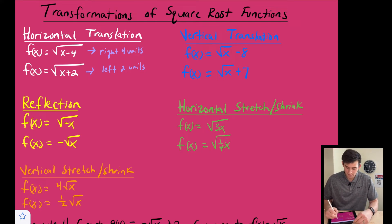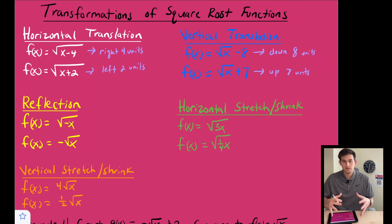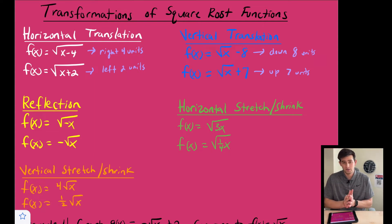With a vertical translation they are what they look like. So for f(x) = √x − 8, we would translate down eight units, and for plus seven we would go up seven units. These are all transformations of our parent function, which for a square root function is f(x) = √x.